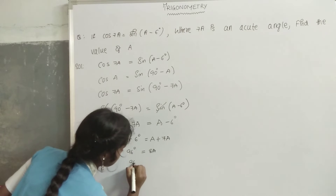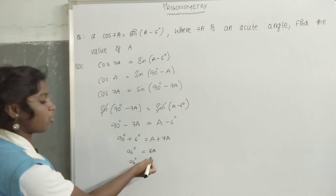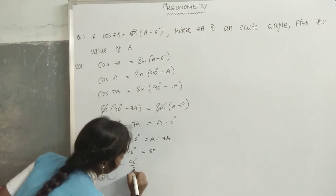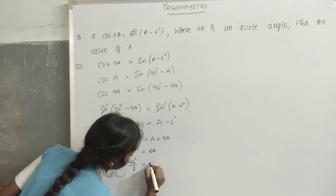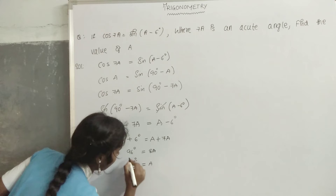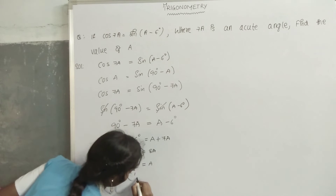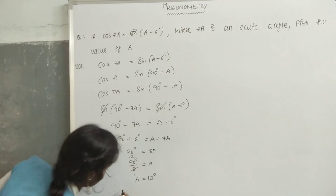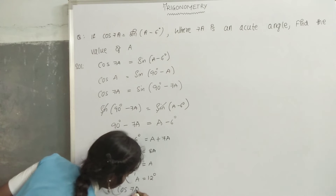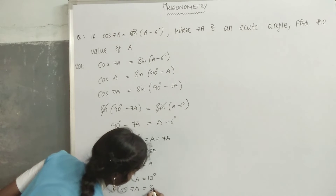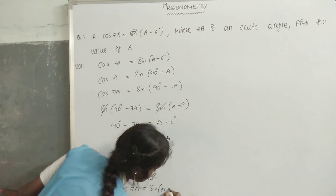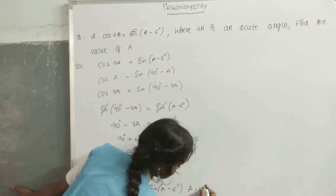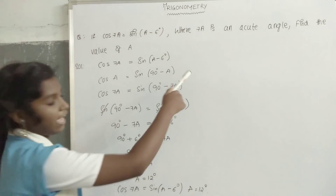96 degrees is equal to 8a. 8 is in multiplication form, then it comes to the other side in division form. 96 divided by 8 is equal to a. Therefore, a is equal to 12 degrees. 12 degrees is an acute angle.